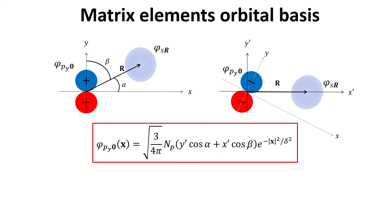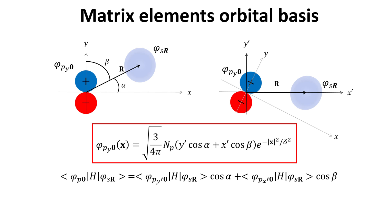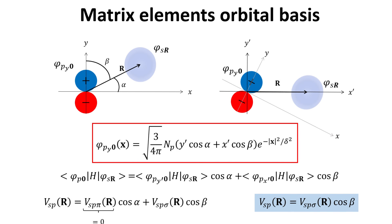The tilted orbital is a superposition of p_x and p_y orbitals in the rotated frame, with coefficients being the cosines of the angles of the lattice vector r with the unrotated y and x axes — that is, alpha and beta. The matrix element can therefore be written in terms of the Slater-Koster parameters. Since the v_sp-pi term vanishes, we are left with the Slater-Koster parameter highlighted in the blue box: when the orbitals are not perfectly aligned, the Slater-Koster parameter is modulated by the cosine of the angle between the lattice vector and the main axis of the p orbital.